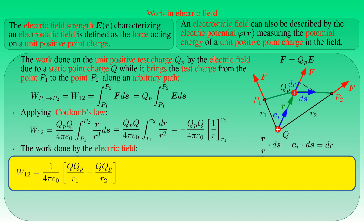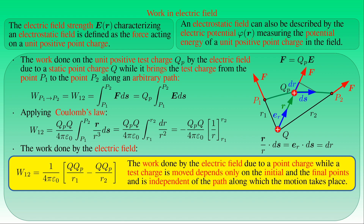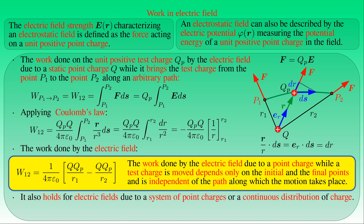Since R1 and R2 are the distances between the point charge Q and points P1 and P2 respectively, the work computed depends only on the positions of P1 and P2 with respect to Q. This shows that the work done by the electric field when it brings test charge QP from one point to another depends only on the initial and final points of the motion, and is independent of the path. Due to the principle of superposition, this result still holds for fields produced by a system of point charges or a continuous charge distribution, provided their configurations are static.